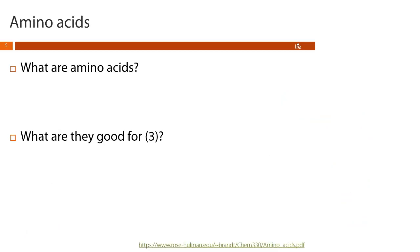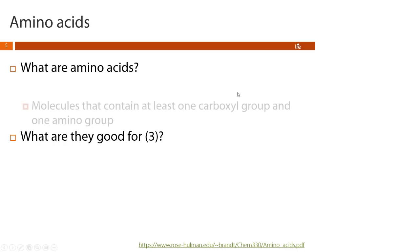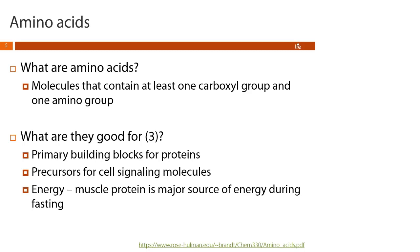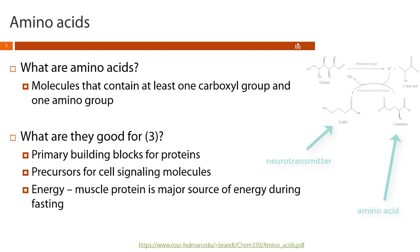So let's talk a little bit more about the building blocks of proteins — the amino acids. From a chemistry standpoint, amino acids are molecules that contain at least one carboxyl group and at least one amino group. In addition to being the building blocks of protein, our body loves to break down muscle protein for energy during fasting. Also, a lot of cell signaling molecules use amino acids as precursors — that means they're built from amino acids.